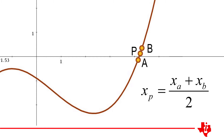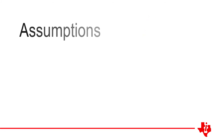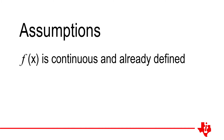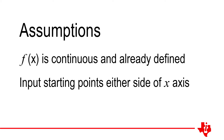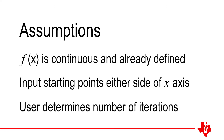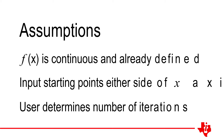Now we have a basic understanding of the bisection method, we can start writing the program. To keep the program simple, we'll assume a couple of things. First, the function is already defined and is continuous over the specified interval. The user will input two starting points on opposite sides of the axis, and the user will determine the number of iterations to be computed, by using three request statements: one for point A, one for point B, and one for the number of iterations, which governs the accuracy of our solution.